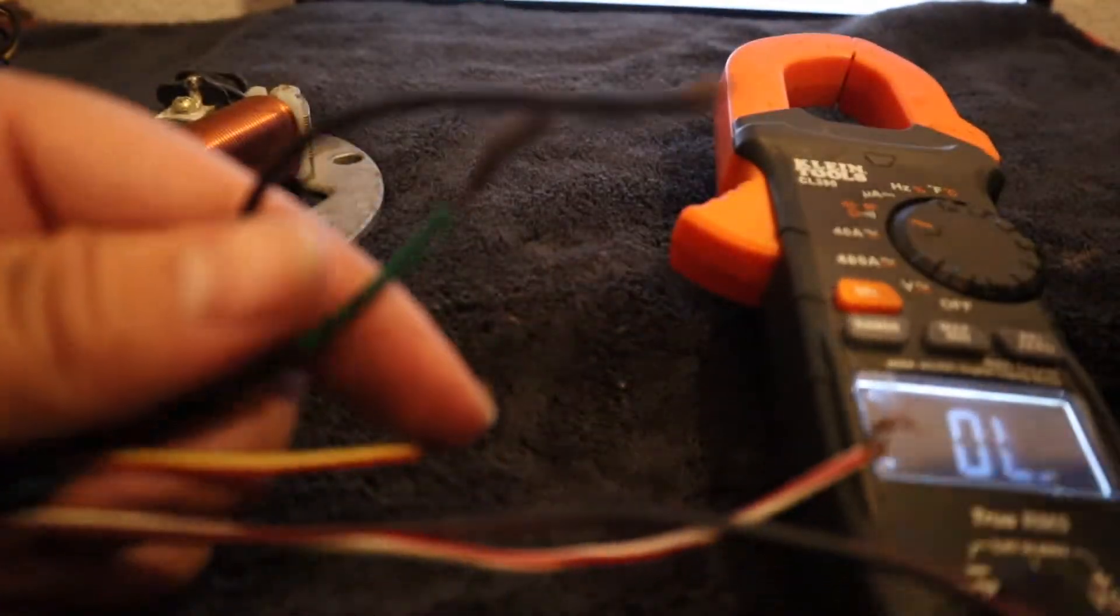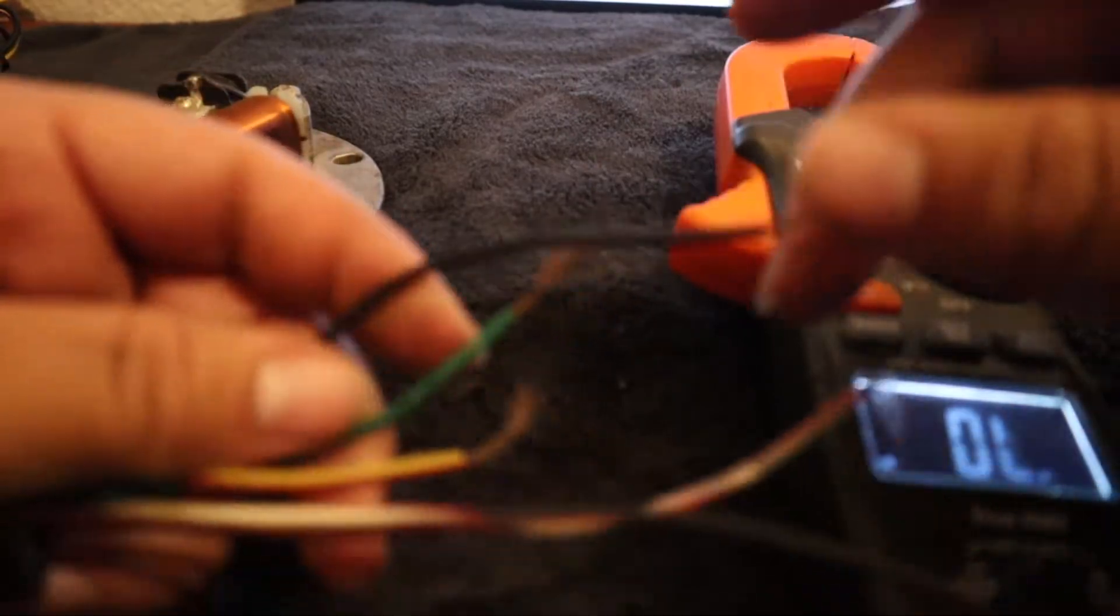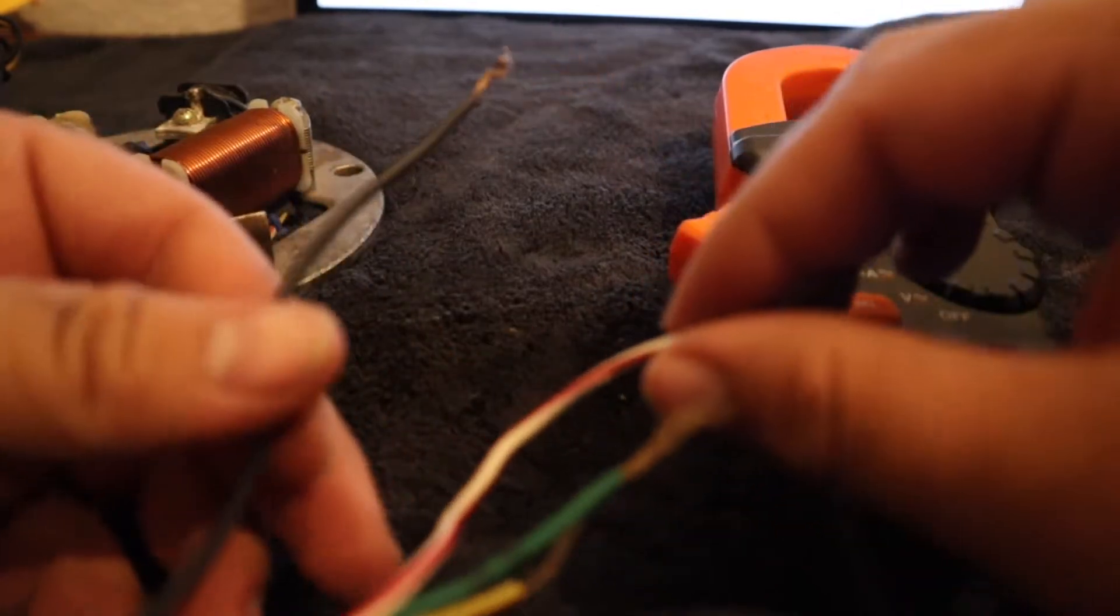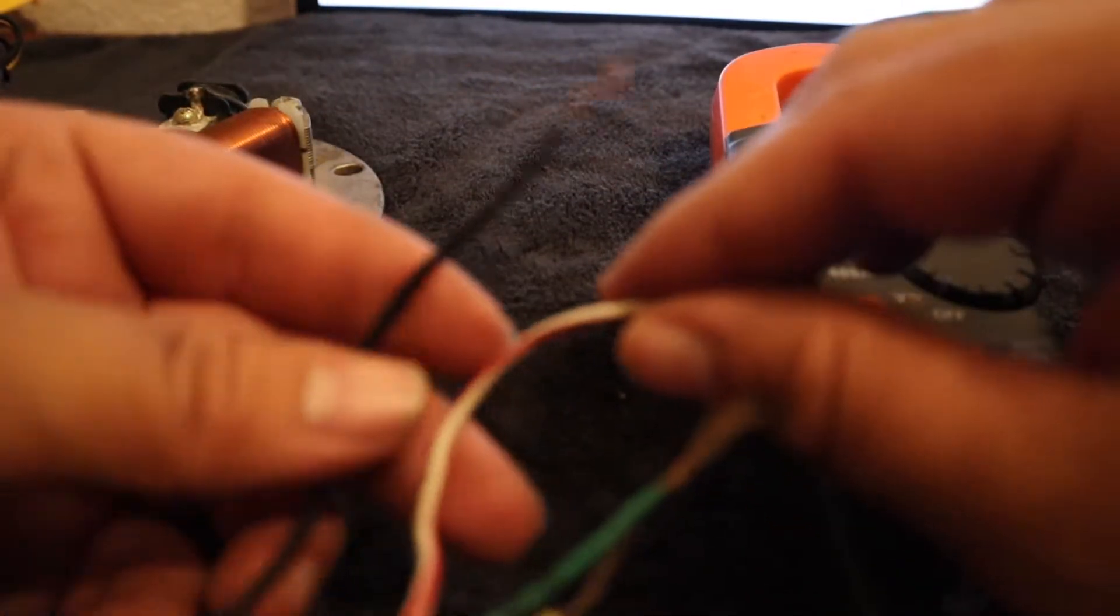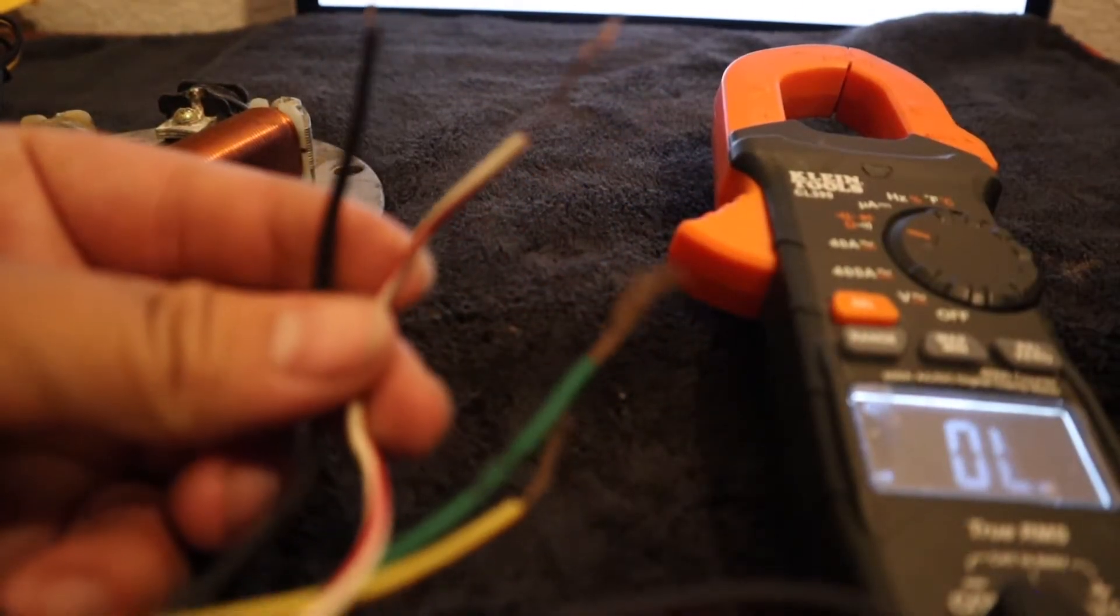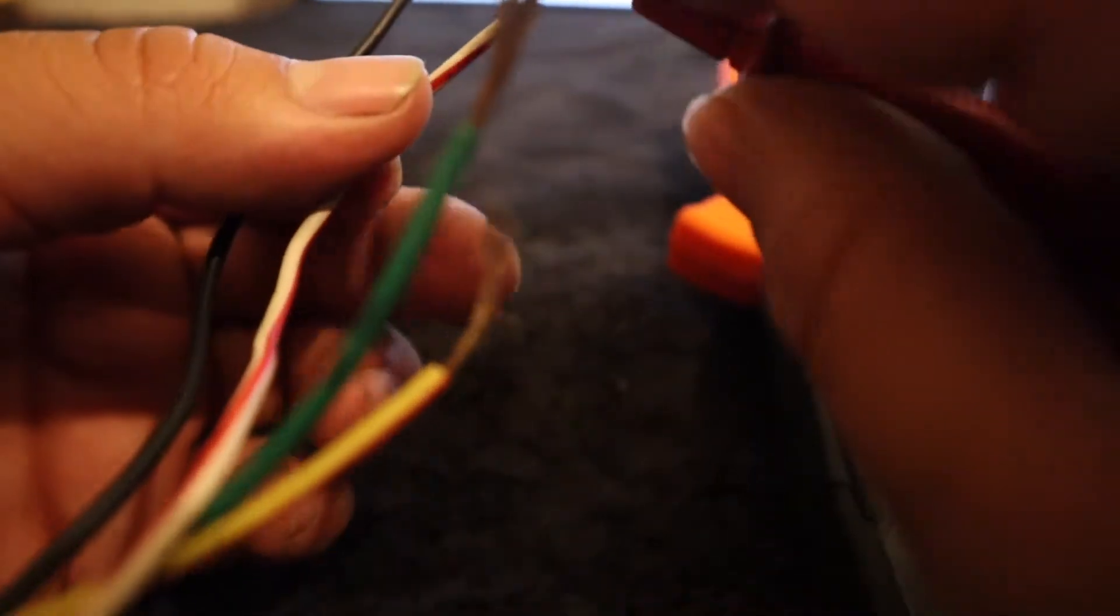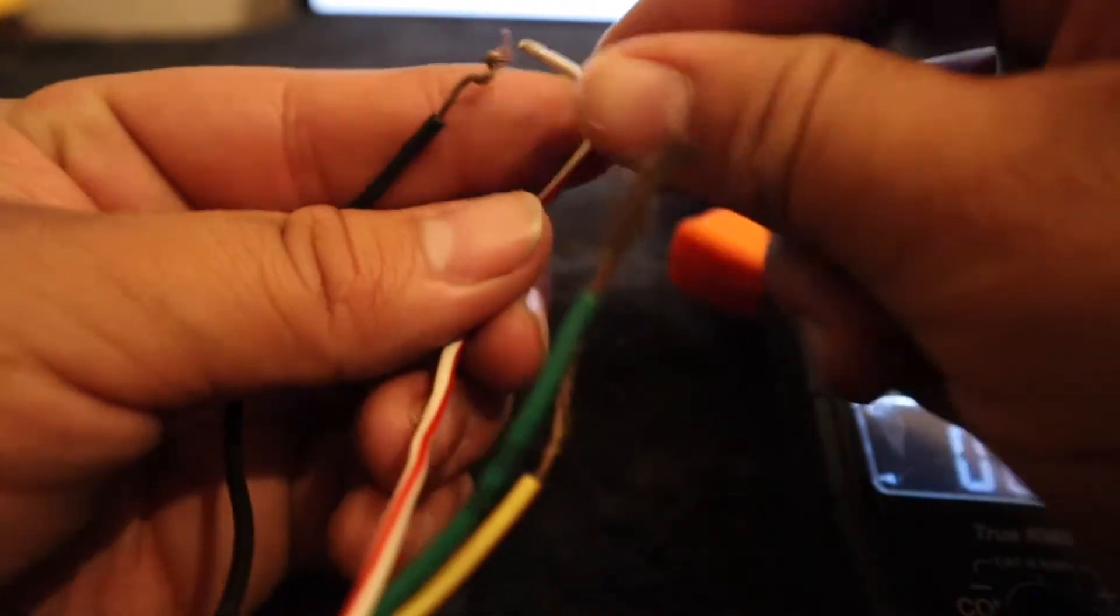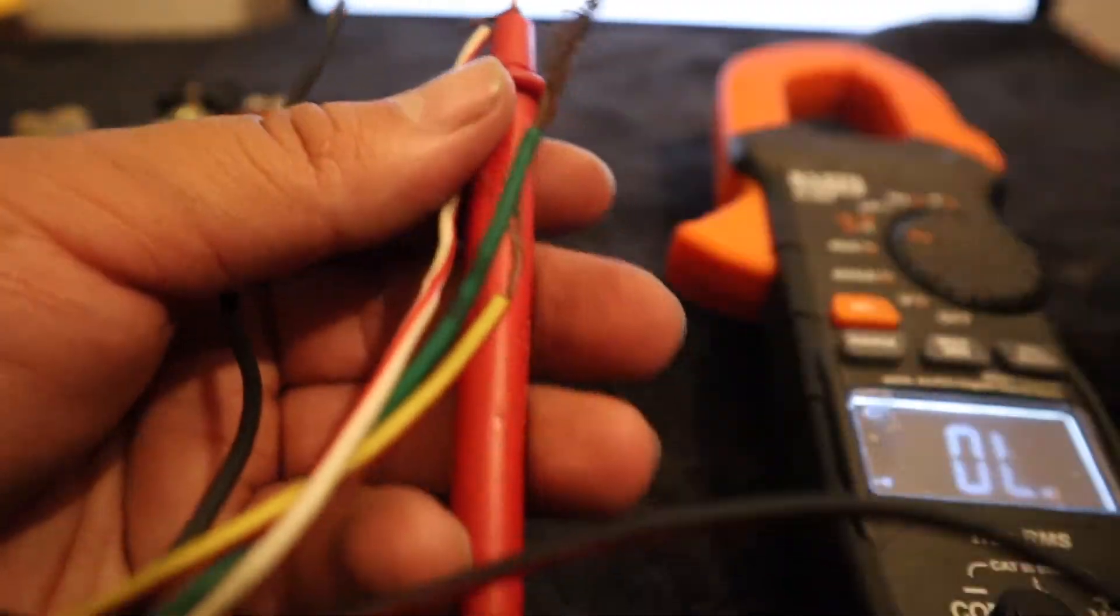But yeah, so we're gonna test the same thing. We're gonna test the black solid wire with white red tracer, get the ohms between 16 and 24. And then we're out of range on this one.